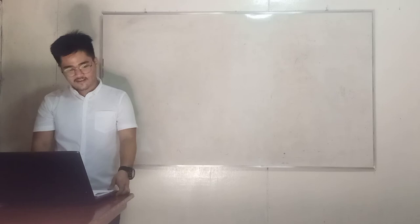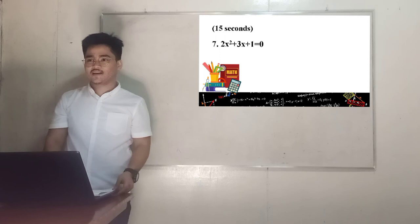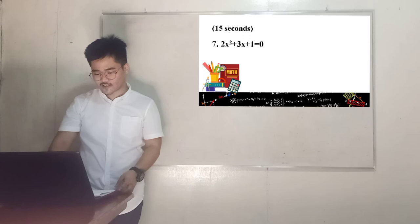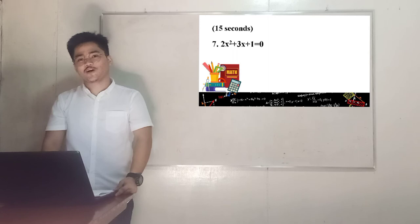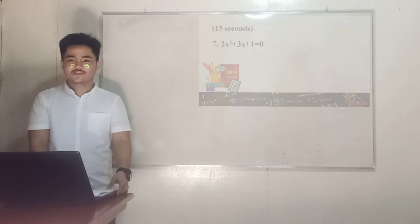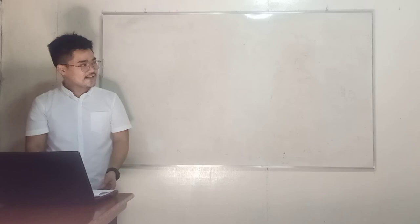Number 7: We have 2x squared plus 3x plus 1 equals 0. You have 15 seconds to answer this question. Time starts now. Okay, time's up. Raise your boards. Green team got the correct answer, orange team got the correct answer, and also blue team got the correct answer. So x equals negative 1 half and x equals negative 1.